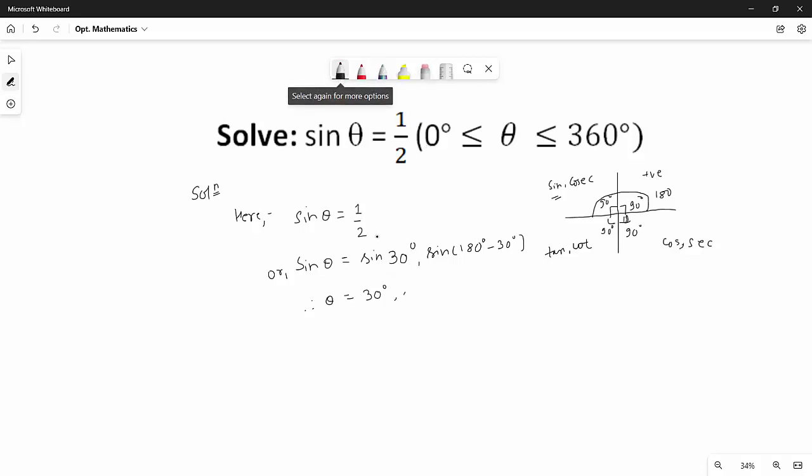It is equal to sin 30° or 1/2. So 180° - 30° becomes 150°. So the possible solutions are 30° and 150° for theta. Thank you.